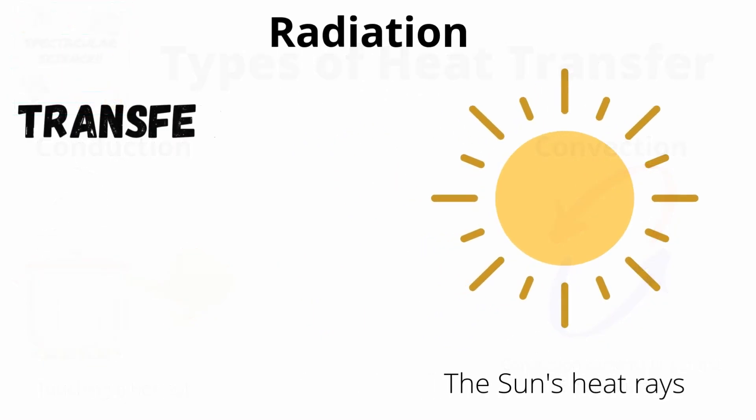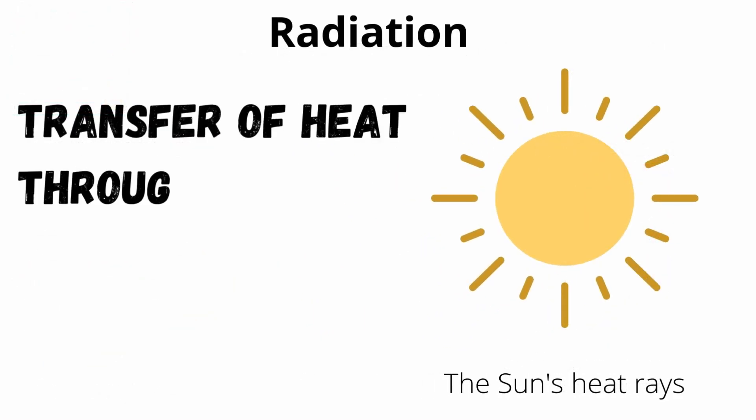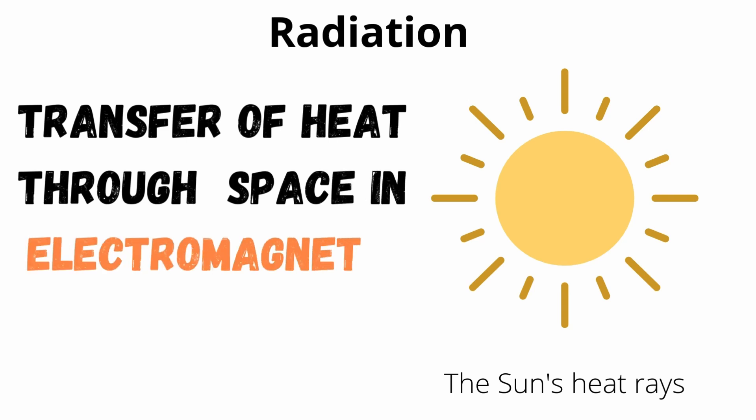The next type of heat transfer we're going to look at is radiation. Radiation is the transfer of heat through empty space, through electromagnetic waves. A very good example of this is the sunlight and all the heat energy that comes from the sun. These are all transferred through electromagnetic waves, which don't require a medium to pass through. That's why we're able to get energy from the sun through space. We receive it through electromagnetic waves on the electromagnetic spectrum, like radio waves, microwaves, infrared, visible, ultraviolet, x-ray, and gamma.